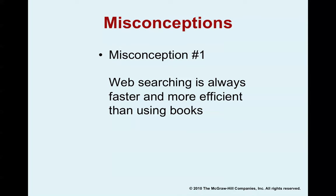There are two misconceptions about research. The first misconception is that web searching is always faster and more efficient than using traditional library resources such as books. It's true that a web search can be quick and successful, but sometimes it's way more time consuming than consulting a book. Think about searching Google and getting 31 million hits — maybe the top ten websites are even remotely relevant, and through those ten, only one or two have statements you can actually use.